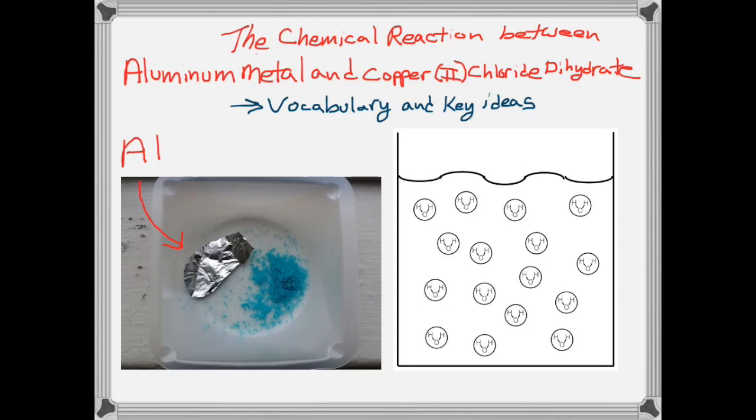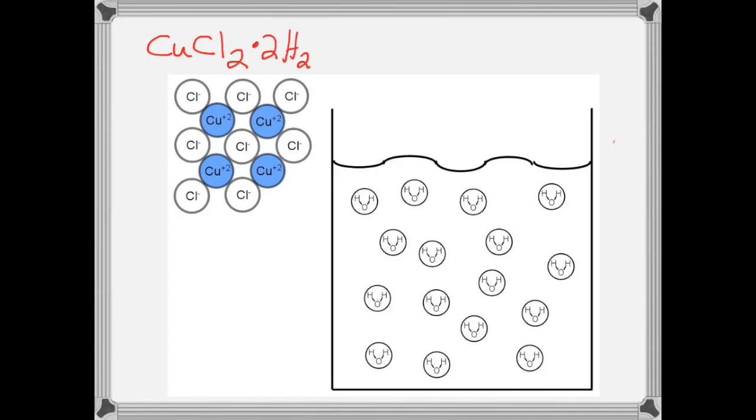Our aluminum will be in the form of aluminum foil and our copper chloride dihydrate in the form of these little blue crystals. The reaction will take place in water. First you'll weigh out a particular amount of the copper chloride dihydrate.